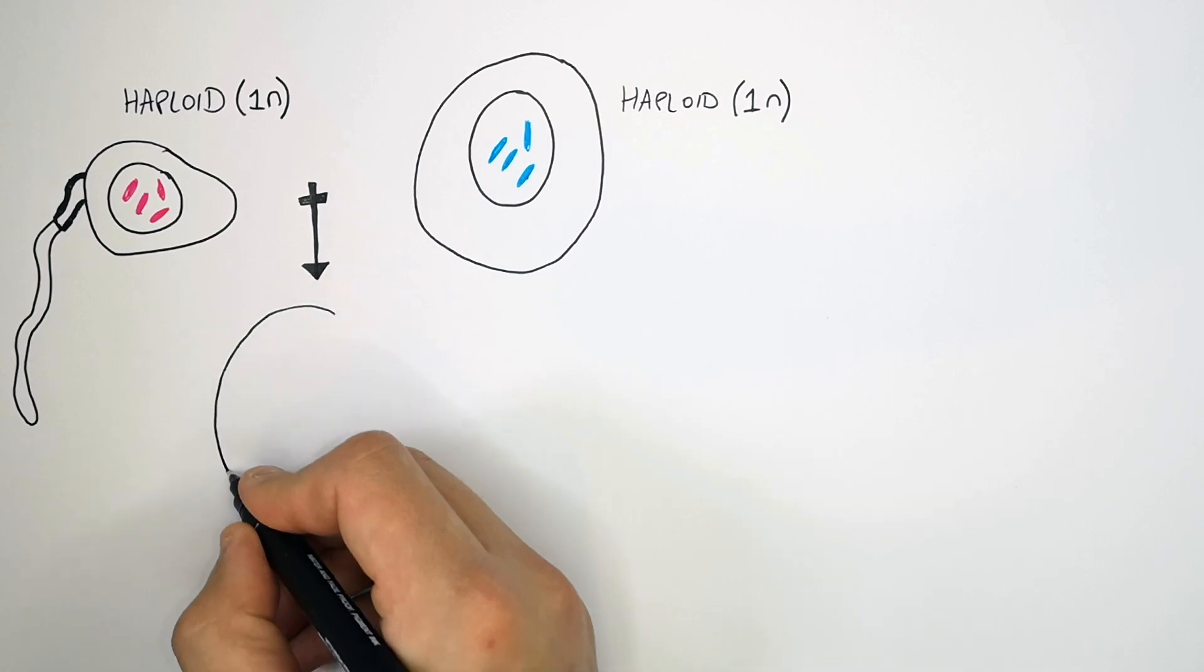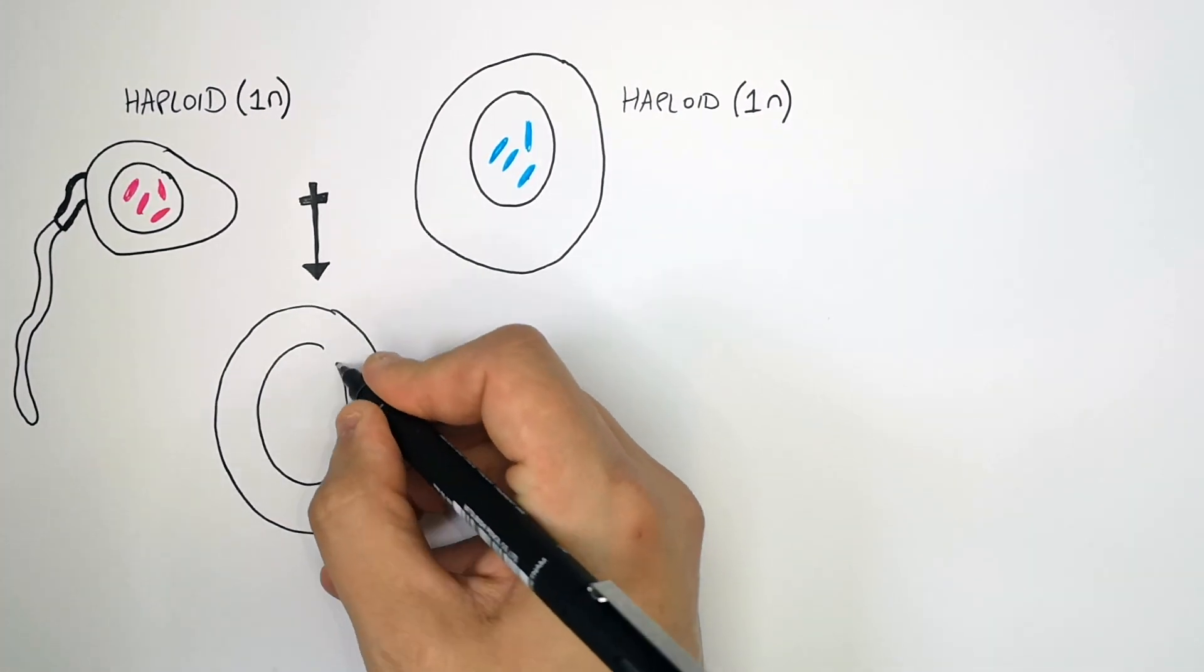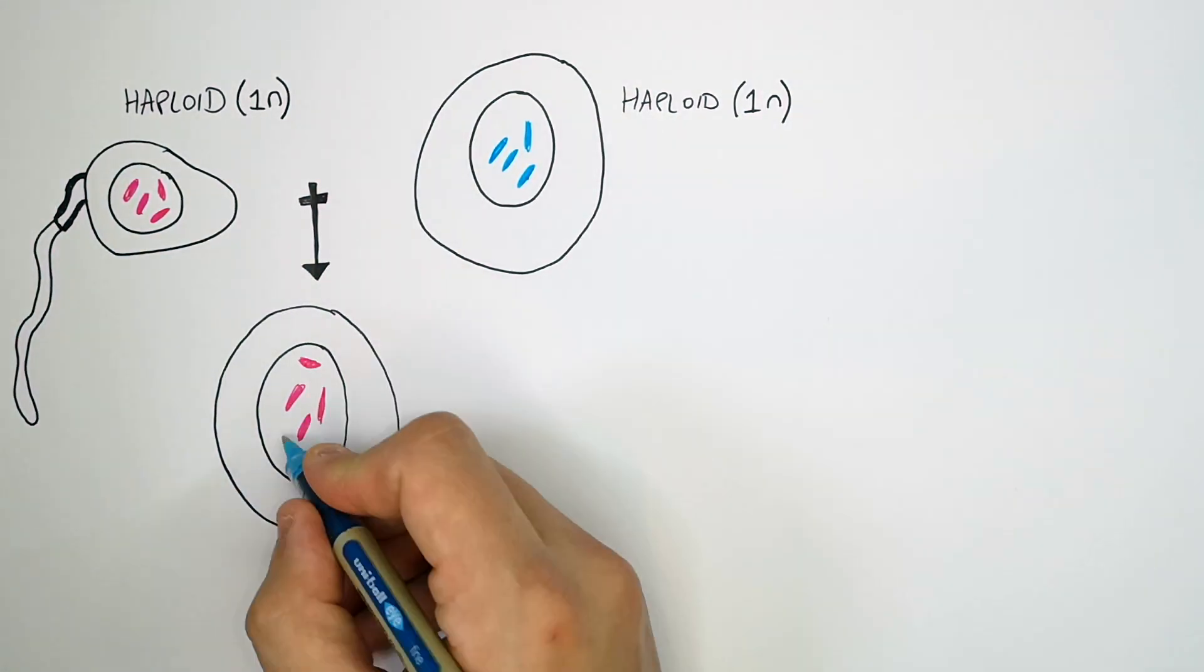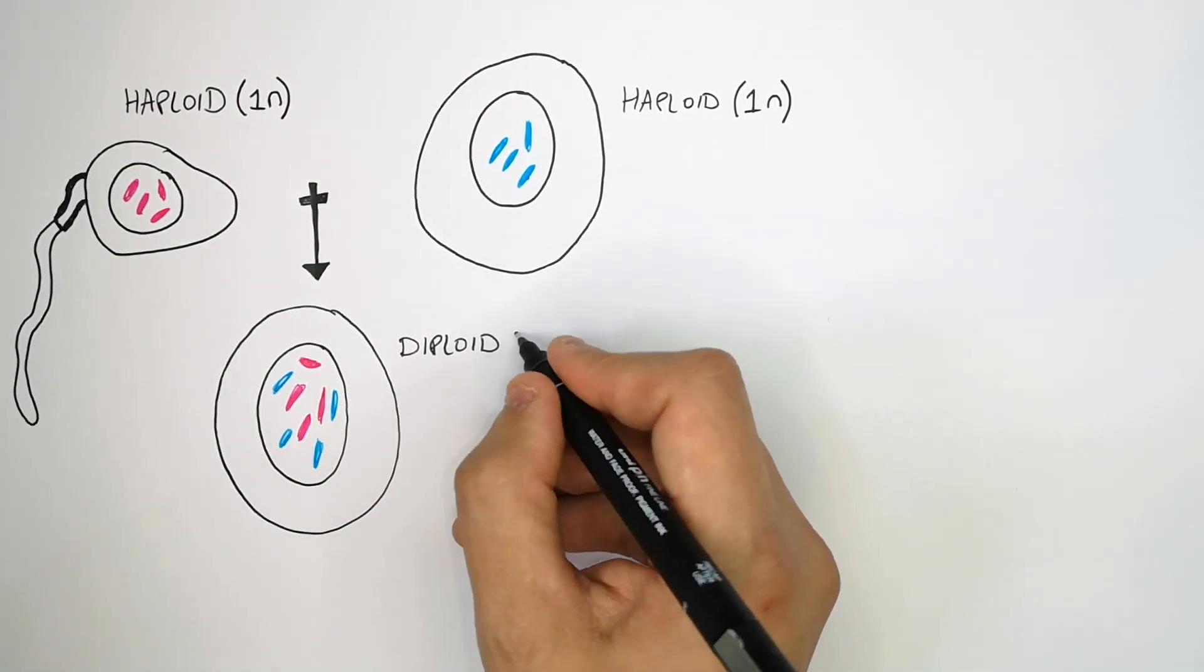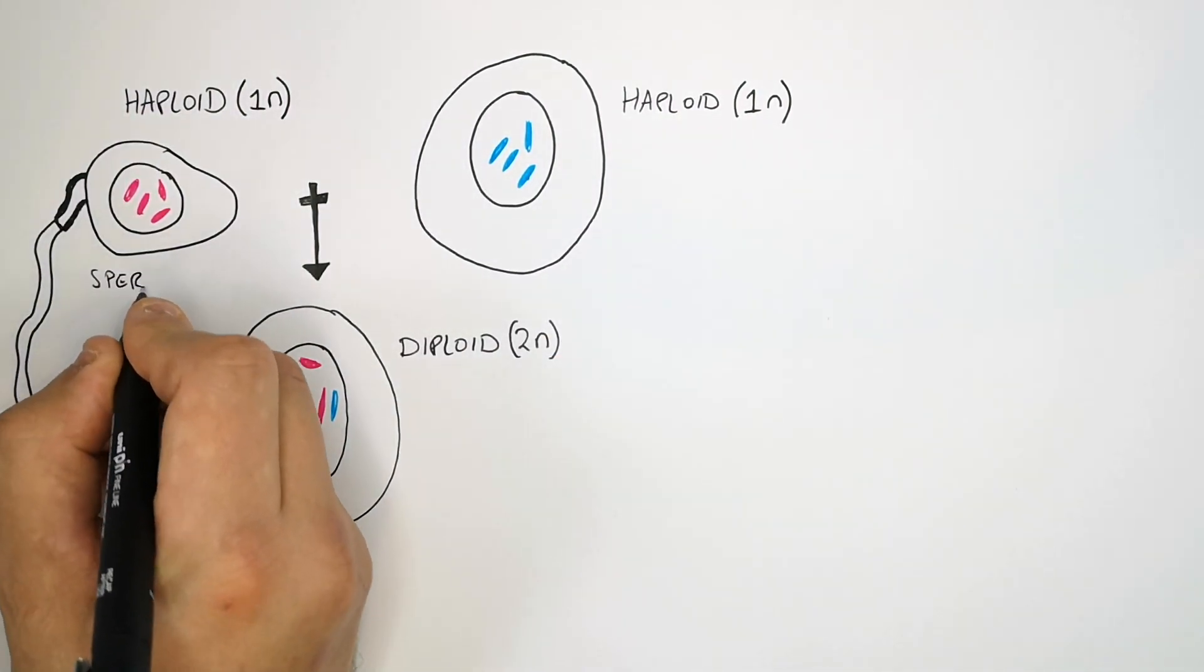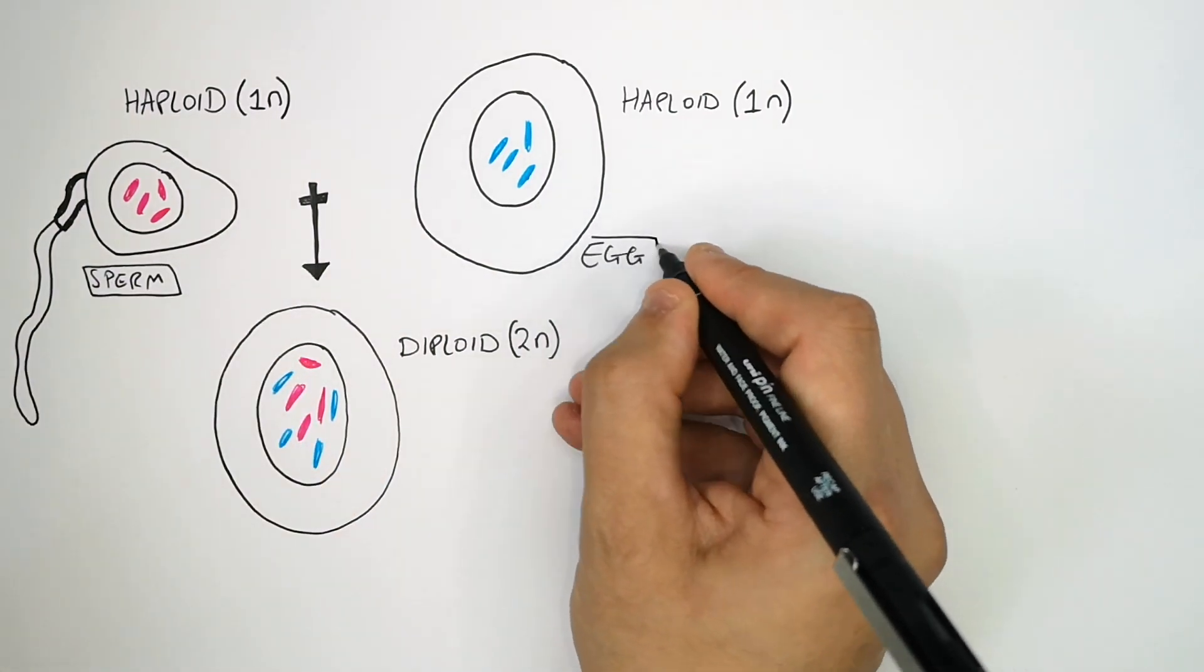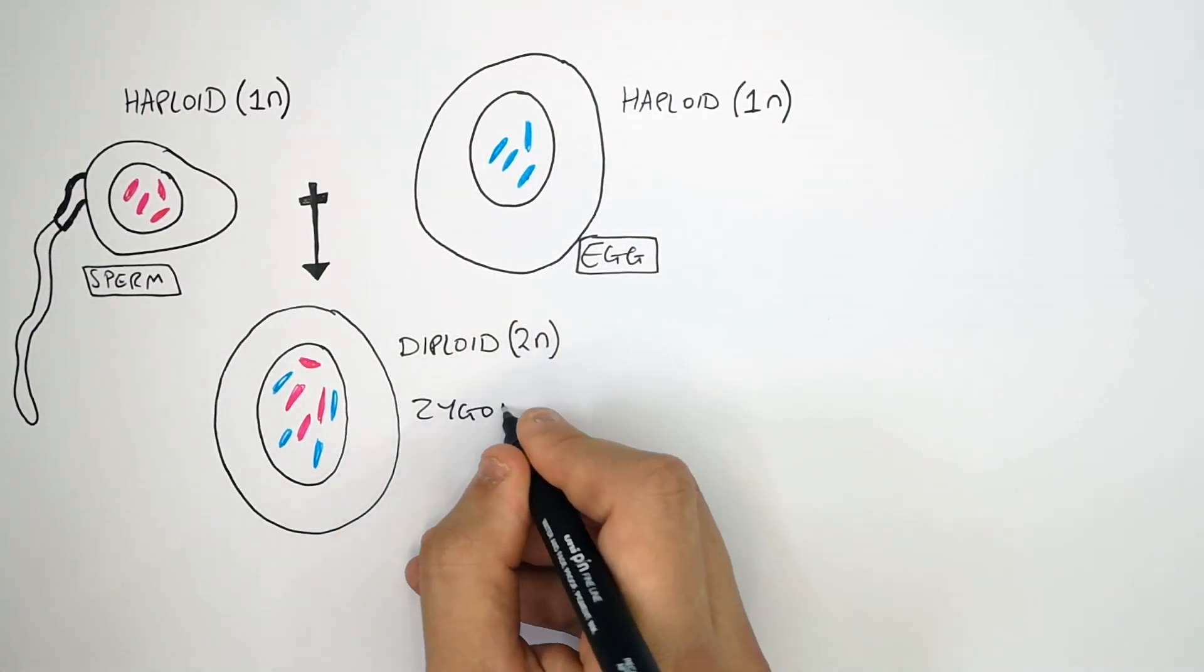Now a zygote forms. A zygote now forms whereby the nuclei of the sperm and the egg fuse to form a diploid cell, a diploid cell with two sets of chromosomes, one from the sperm and one from the egg. So that is a zygote.